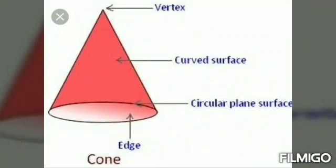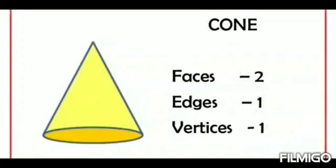Next, we see about cone. In a cone shape, there are one curved surface and one plane surface. Cone has one edge and one vertex.